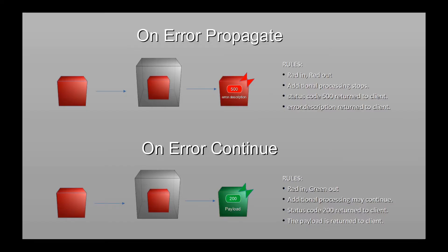To summarize: OnErrorPropagate — red in, red out, status code 500, error message is returned. For OnErrorContinue — red in, green out, status code 200, and the payload is returned. We still have quite a bit more to cover. Now might be a good time to rewind the video if there's something you didn't understand. If you're still with me, let's move on.